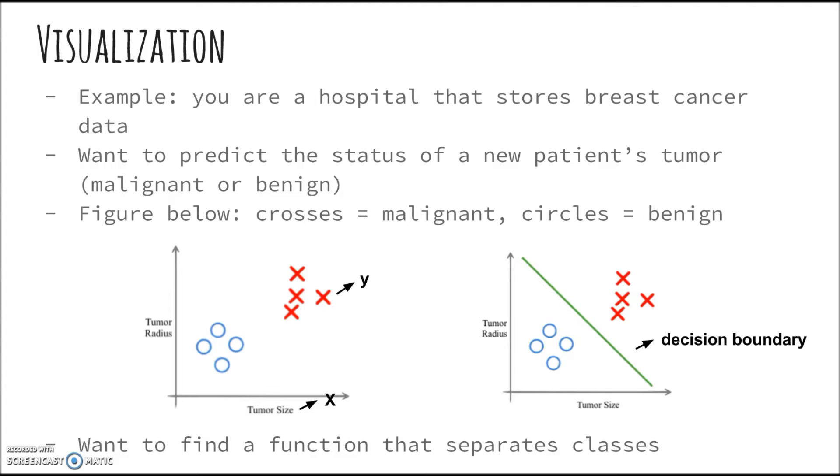A doctor may now be able to use this decision boundary to postulate whether a patient has a benign or malignant tumor. This need not exist in two dimensions either. We can do this for n features. We will look more at this decision boundary later on.